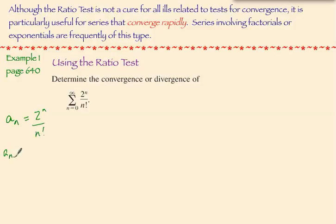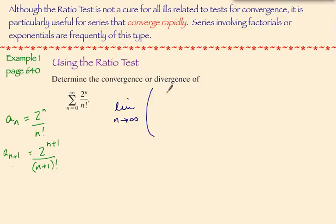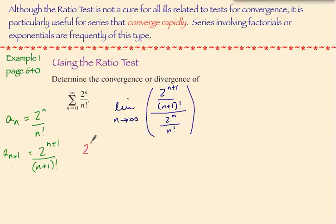I'm also going to identify the a sub n plus 1 term, which is 2 to the n plus 1 over n plus 1 factorial. We're going to make a ratio with this term over this one and take the limit. We're going to have the limit as n approaches infinity of the following ratio: 2 to the n plus 1 over n plus 1 factorial, over 2 to the n over n factorial. This is a complex fraction, so I'm going to do a little simplifying.